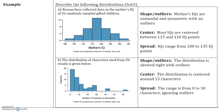Please describe the following distributions. In Part A, researchers collected data on a mother's IQ of 36 randomly sampled gifted children. The shape of this distribution is approximately symmetric with one mode, so the mother's IQs are unimodal and symmetric with no outliers. The center: most IQs are centered between 115 and 120 IQ points. The spread, when the distribution is symmetric, is the lowest and highest value — IQ ranges from 100 to 135 IQ points. Whenever we describe a distribution, we always use SOCS: shape and outliers, center, and spread.